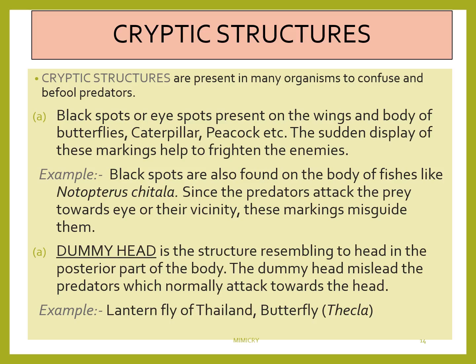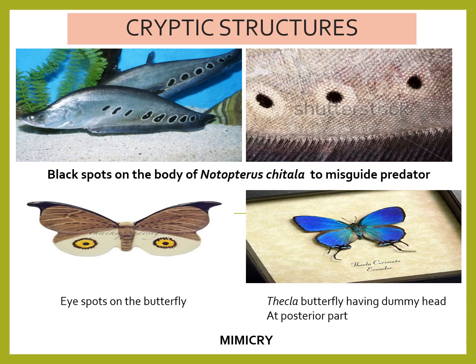Dummy heads are present on the posterior part of the body. These dummy heads mislead the predator, which normally attacks towards the head. For example, the thikla butterfly and the lentil fly of Thailand. On the fish Notopterus, we have the eye spots. On the butterfly, the eye spots represent and the false heads represent in the thikla butterfly.